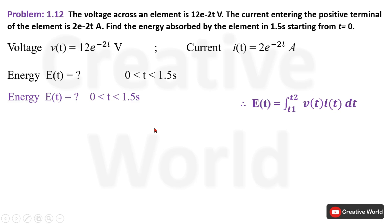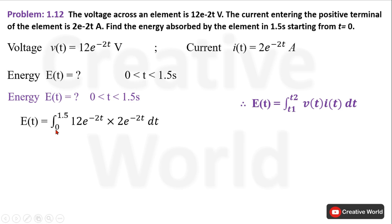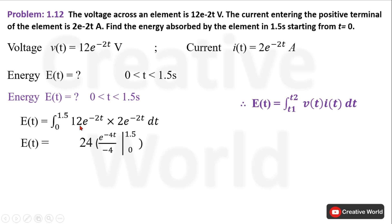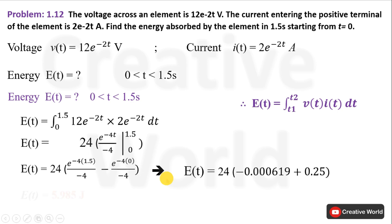Again we will use the energy formula: energy equals voltage multiplied by current, integrated from T1 to T2. Putting the values of voltage and current into the formula with the required time interval and solving the integral — assuming knowledge of how to integrate exponential values — here is the solution of the integral, and after doing some mathematics we get the value of energy.